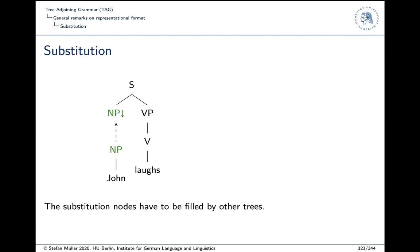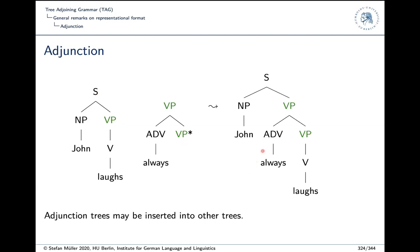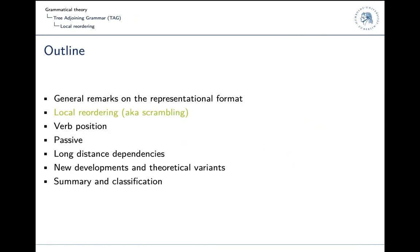The first operation is substitution: we have one node with the arrow and we can insert something else into it, and the result is the other tree inserted there. Adjunction is a bit more interesting: the adjunction tree says it is looking for a VP node. If this tree has a VP node, we can take the tree apart and insert the adjunction tree, and the result will be 'John always laughs.' We took the VP and inserted this part, doubling the VP node — and that is adjunction.